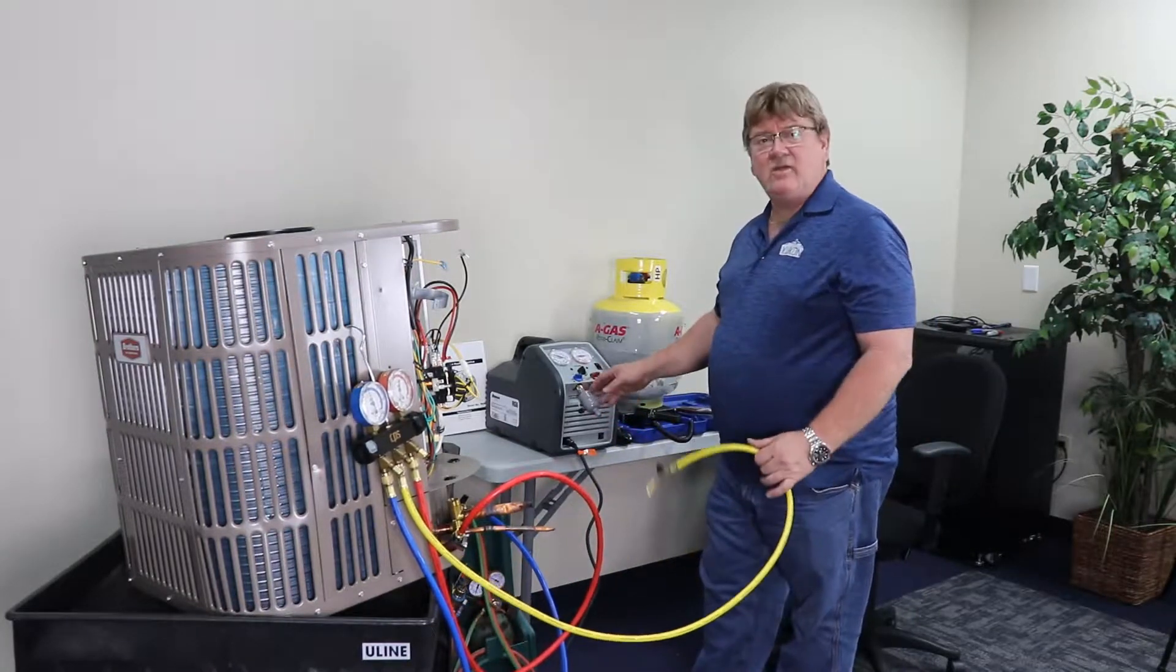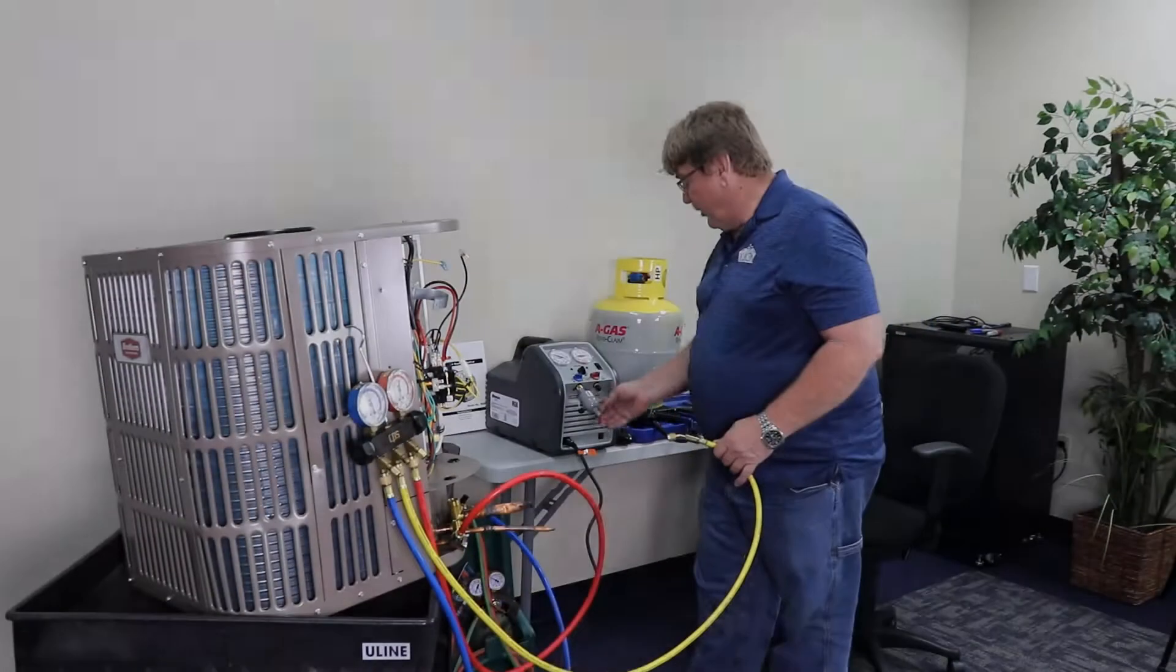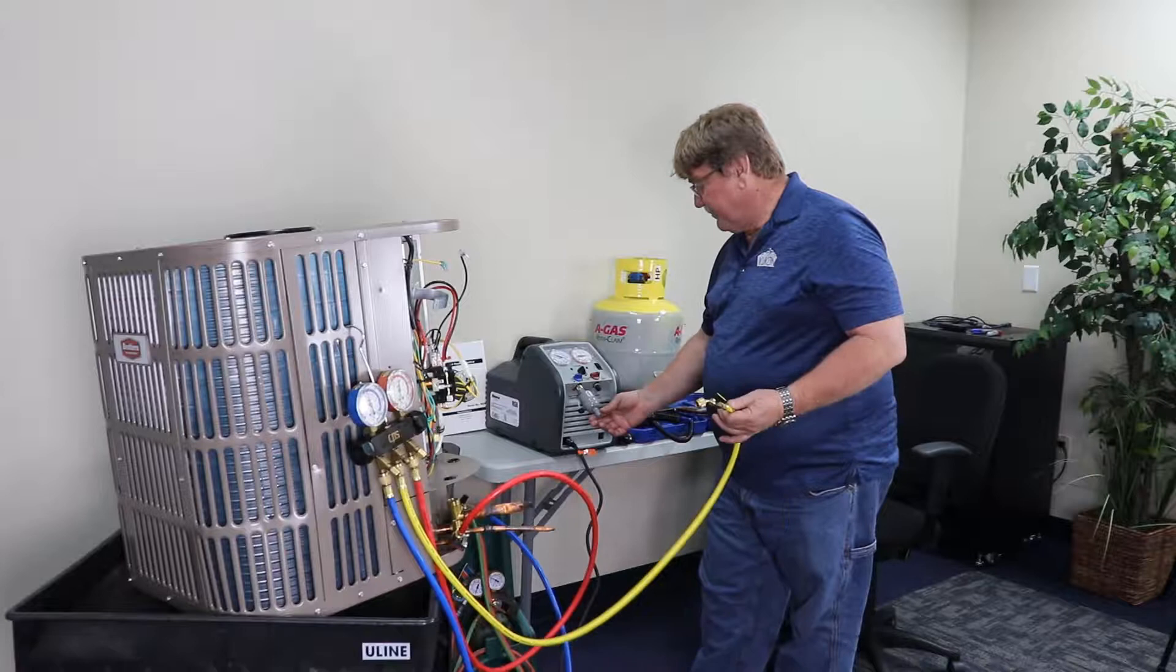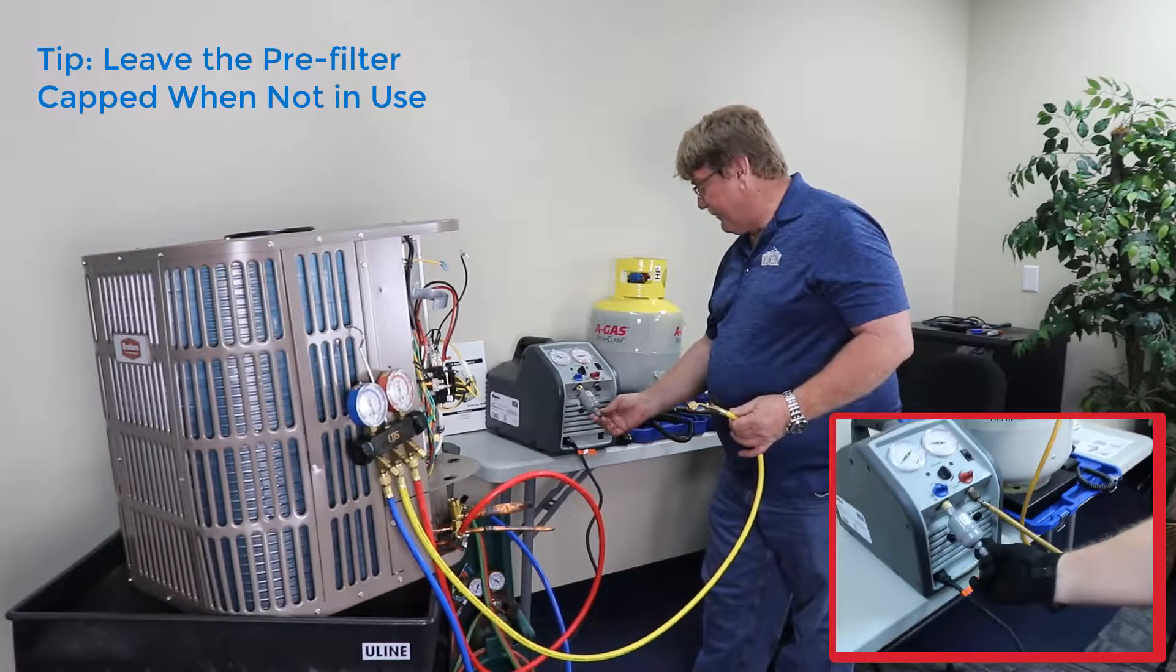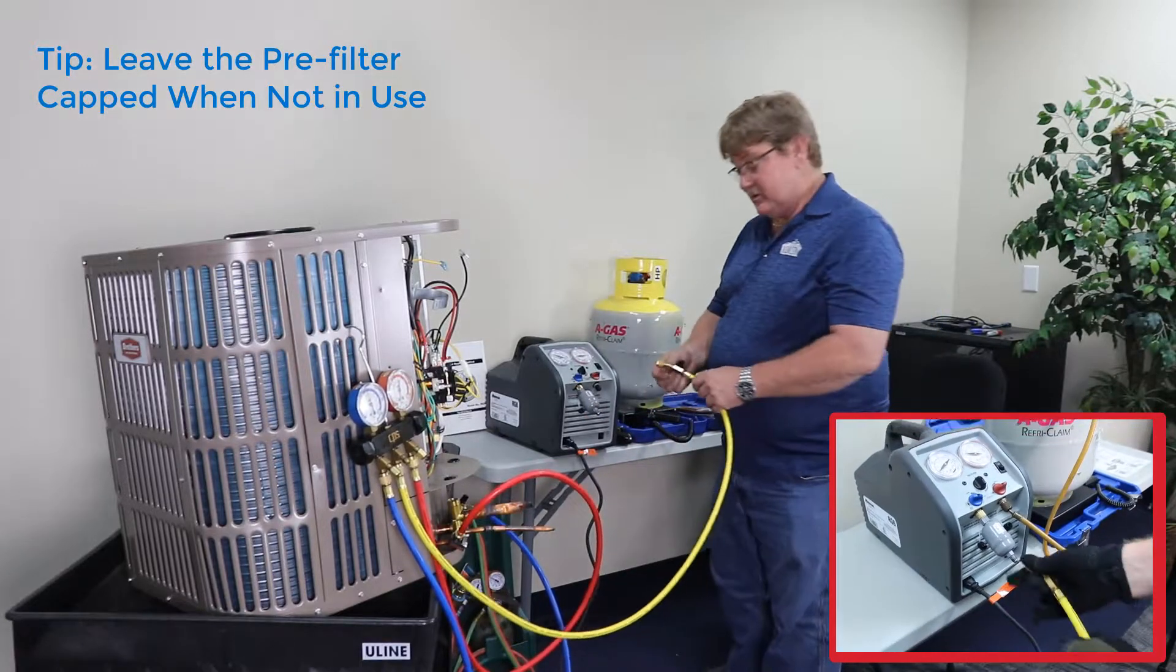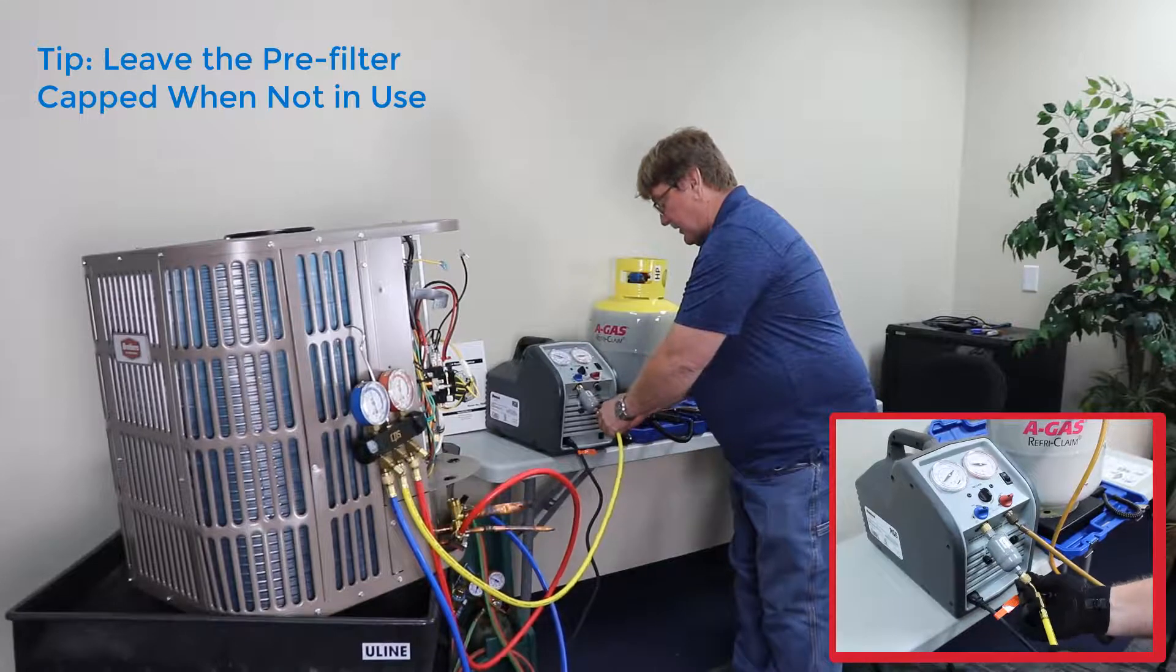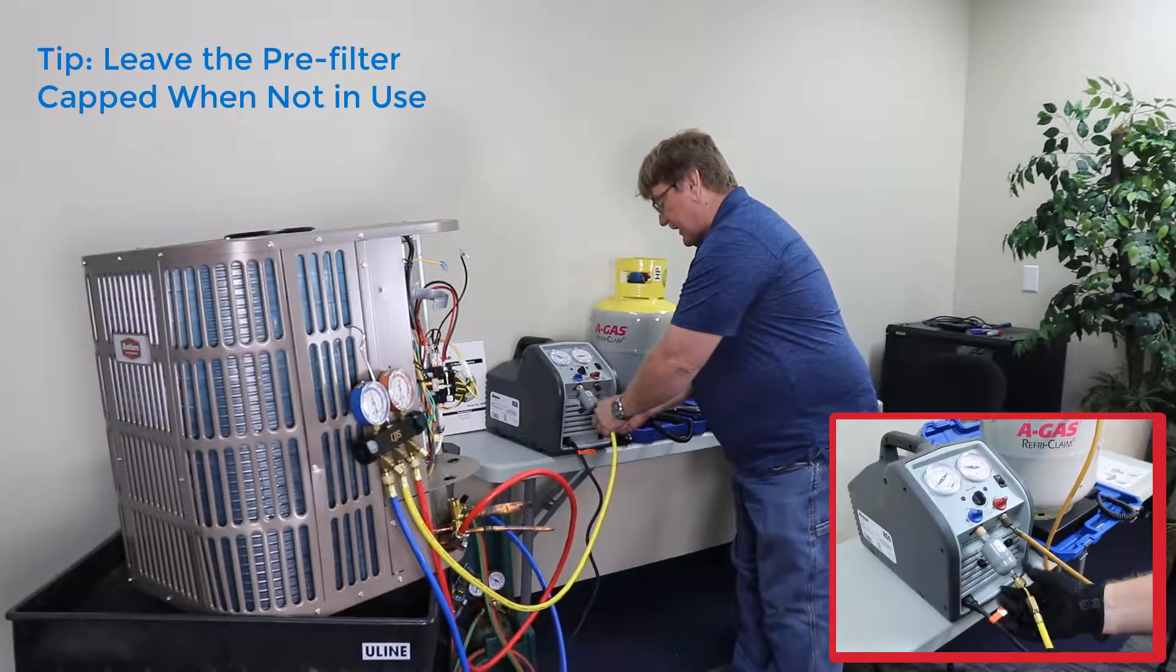On your pre-filters, some of your machines automatically come with them, some you have to buy them as a separate accessory. Always when you have a pre-filter on there, make sure you always leave it capped as it is a desiccant. If you leave it uncapped all the time, it'll absorb moisture just from the ambient air, and when you get ready to do a recovery it'll already be clogged. So make sure you keep them capped when not in use.